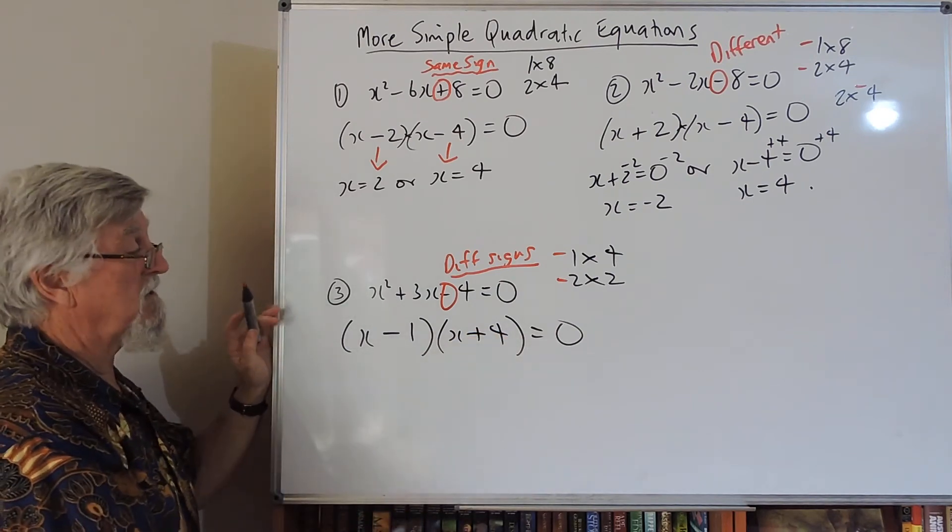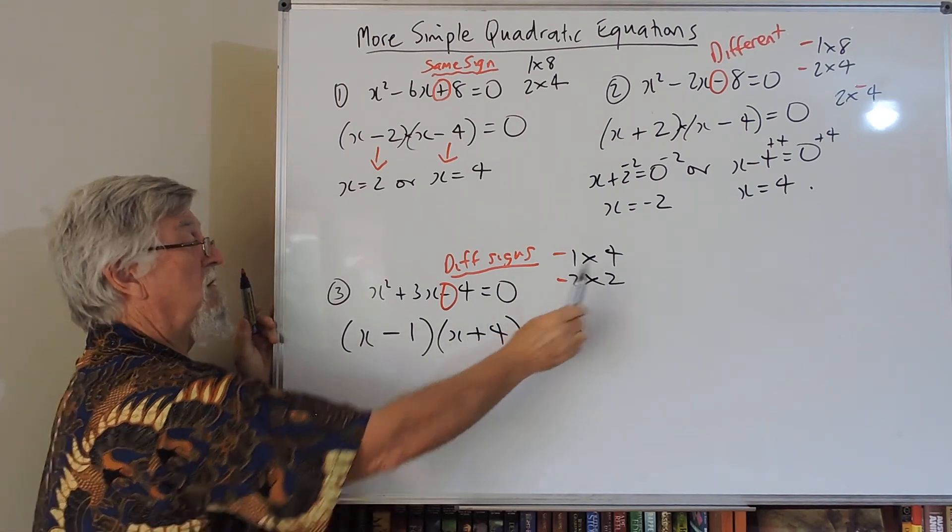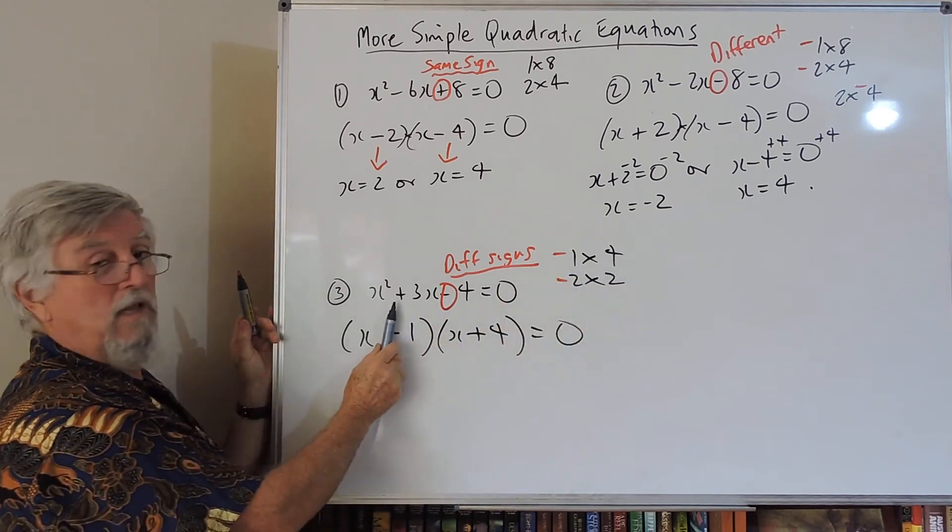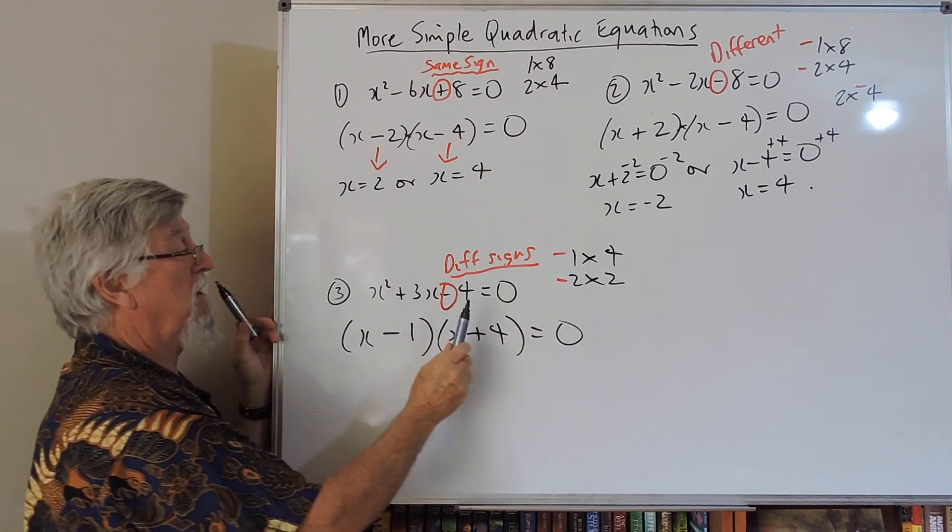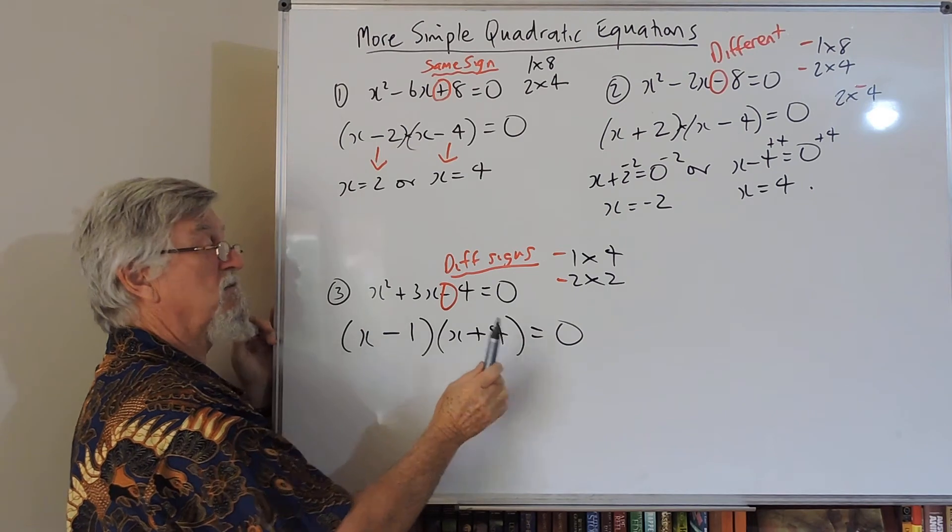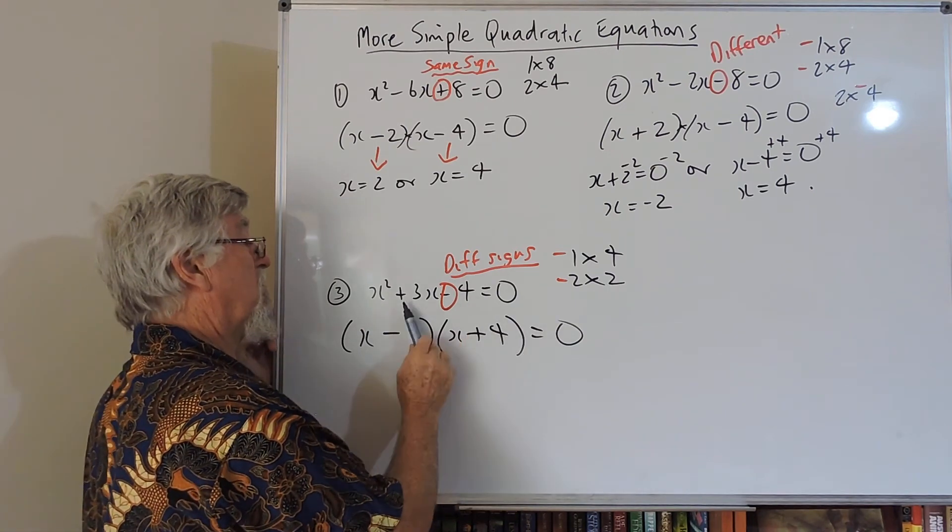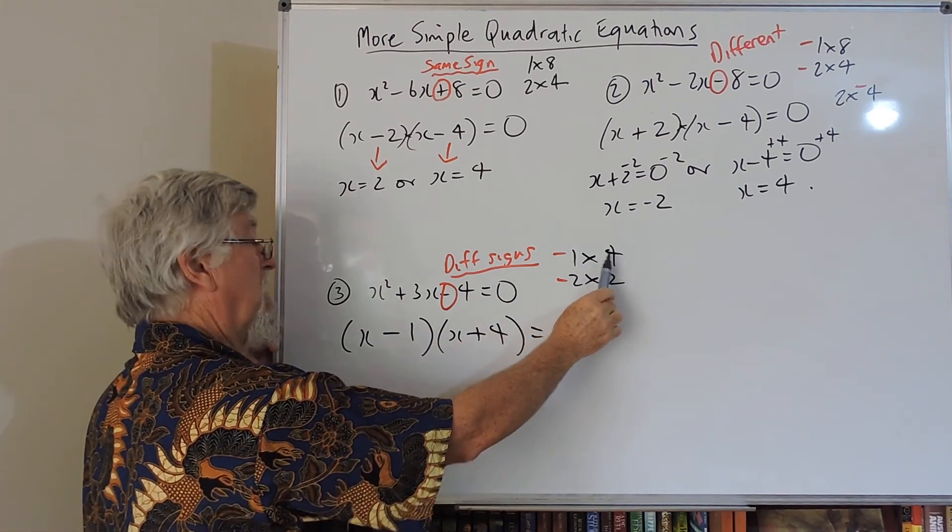And there are shortcuts like this. The bigger of the two numbers, the 4 and the 1, we get that plus. So if that makes sense to you, the bigger of these two numbers has more effect, is more dominant, so it would turn it into a plus. So that would get the plus.